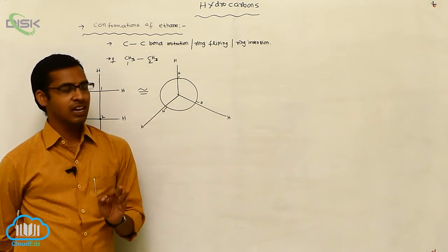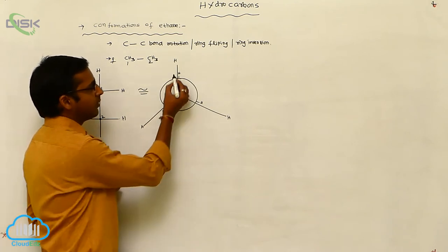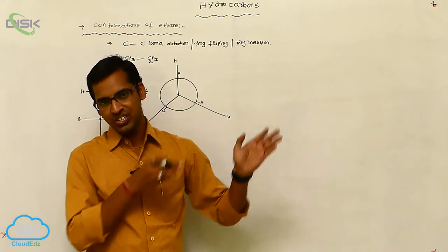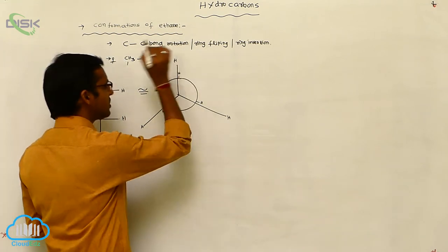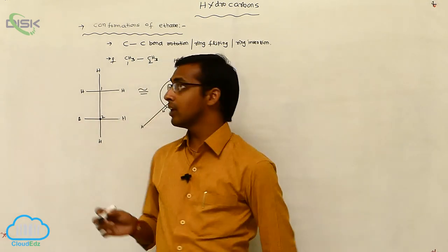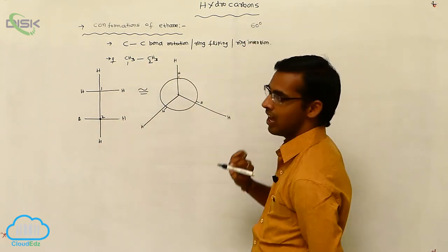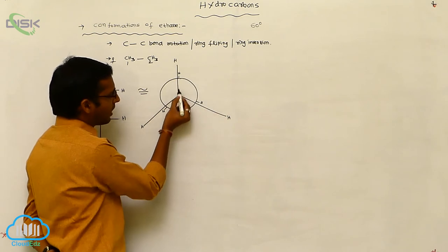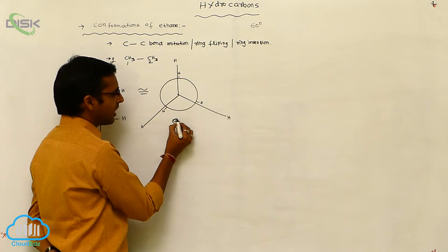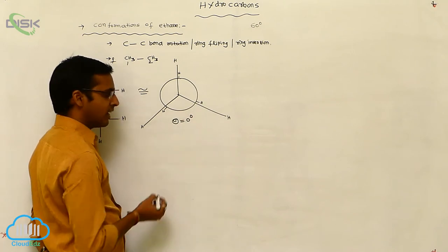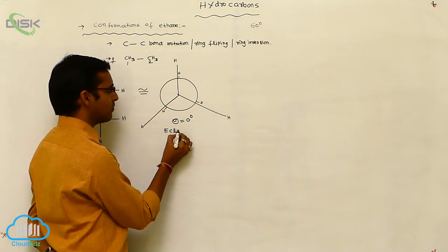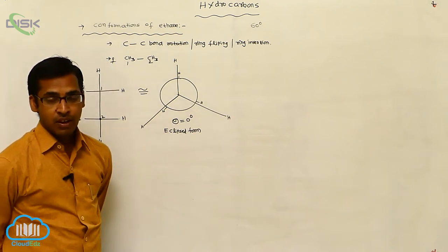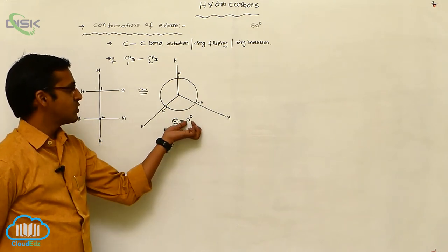Each C-C bond angle is rotated by 60 degrees. In conformation analysis, we apply only 60 degrees or multiples of 60 degrees. Here the front carbon and back carbon dihedral angle is zero — theta equals zero degrees. This form is called the eclipsed form, where the dihedral angle value is zero degrees.